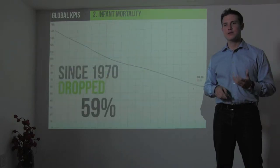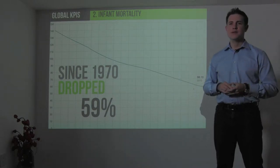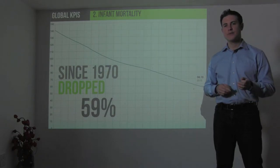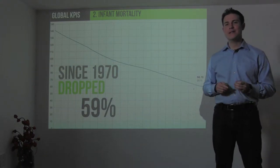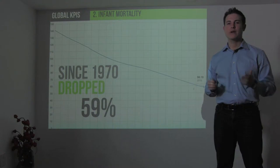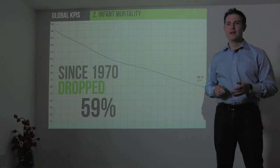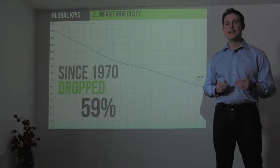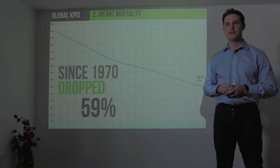The next statistic I think is really important is infant mortality, measured per every 1,000 births. Back in 1970, out of every 1,000 births, 140 of those infants would die by the age of five. By 2010, that dropped 59% to 58 out of 1,000. Now, that's still 5.8%, which is too high. Here in America, we've had infant mortality levels under 2% for quite some time. But we are making tremendous progress as a species in increasing the life expectancy of our most vulnerable children and infants. This is great progress.